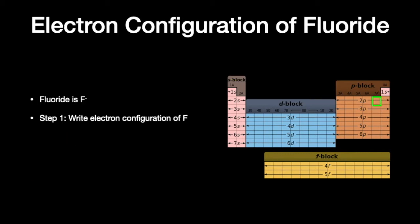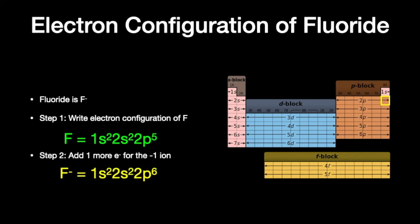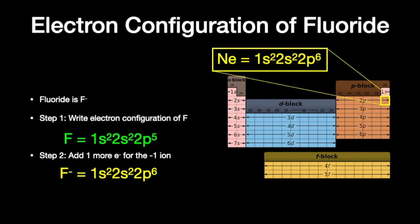Fluorine is located in the halogens, and fluoride is an ion formed when fluorine gains one electron. We write out the electron configuration for fluorine — it's almost got a completely filled 2p subshell. When we add one more electron to create the minus 1 ion, we form a completed 2p6 subshell and a completed n=2 shell. Neon has this exact same electron configuration, so fluoride is isoelectronic with neon.